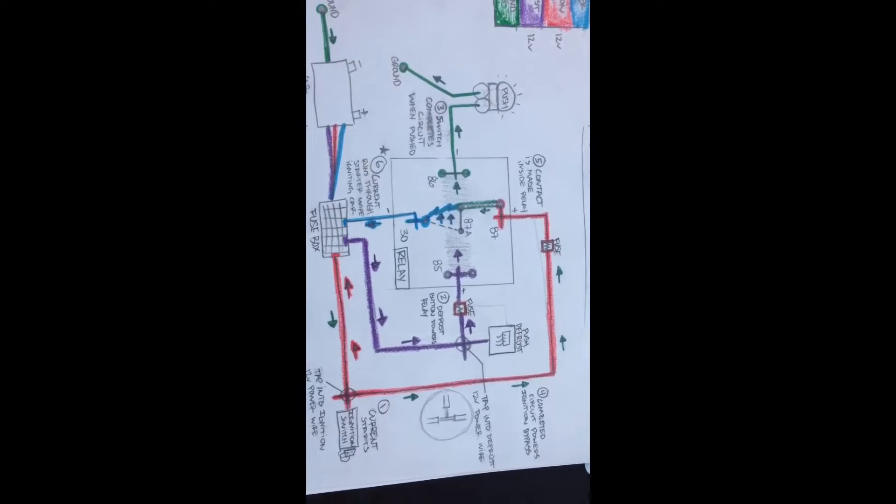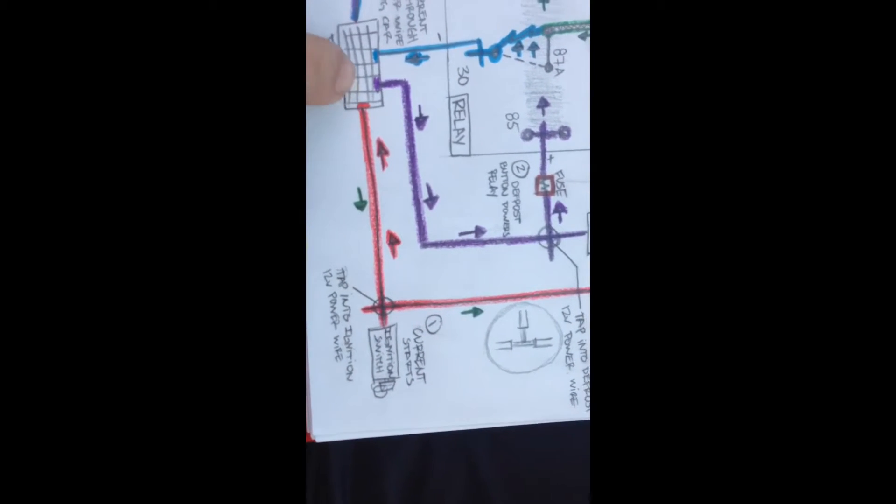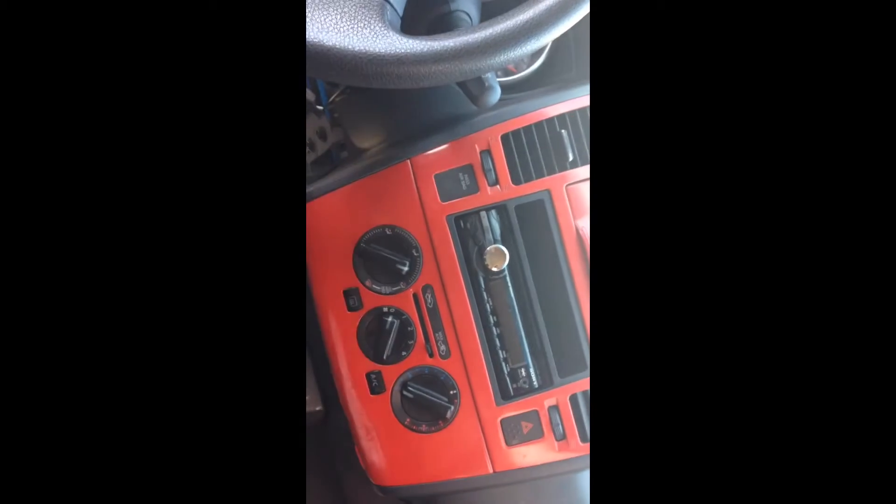So this whole circuit starts with your ignition switch. As soon as you turn your key, it will give power. The current will run through your fuse box. Your ignition wire after that will give power to your whole dash, your whole air system, your radio, everything.